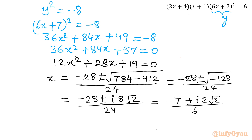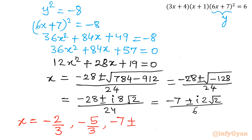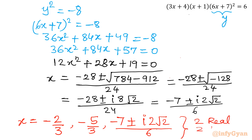So there are 4 solutions in total: x = −2/3, x = −5/3 (the two real solutions), and x = (−7 ± 2i√2)/6 (the two complex solutions).